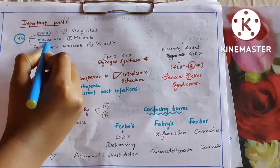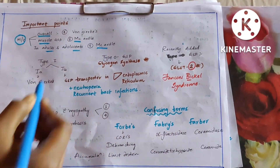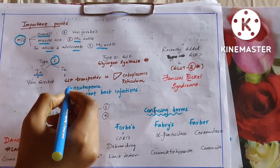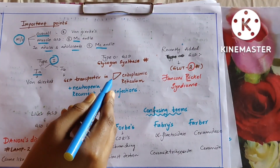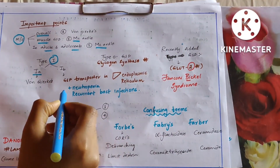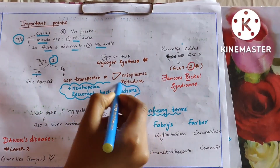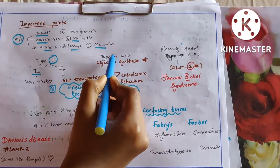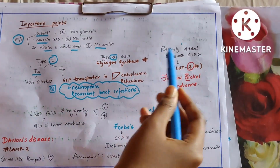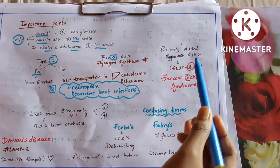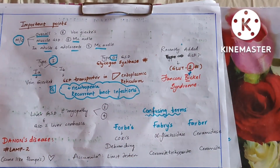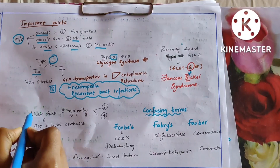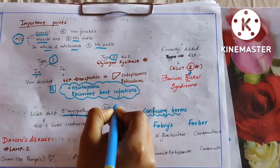Type 1 GSD is divided into 1a and 1b. 1a is Von Gierke's and 1b is due to glucose-6-phosphate transporter deficiency in the liver endoplasmic reticulum. The clincher point for 1b is neutropenia and recurrent bacterial infections. There is a recently added GSD due to GLUT transporter defect — Fanconi-Bickel syndrome — and type 0 GSD is due to glycogen synthase deficiency.